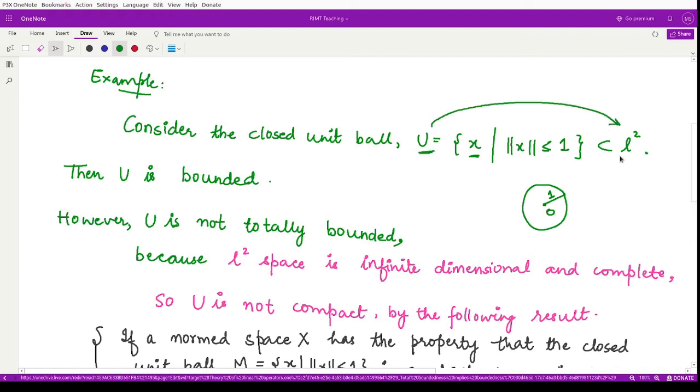What is this space l2? That is the infinite dimensional space that we already know. So in this case the set U is bounded. There is no problem, because all the elements have norm less than or equal to one. So this one forms the bound for the set U. However, this set U is